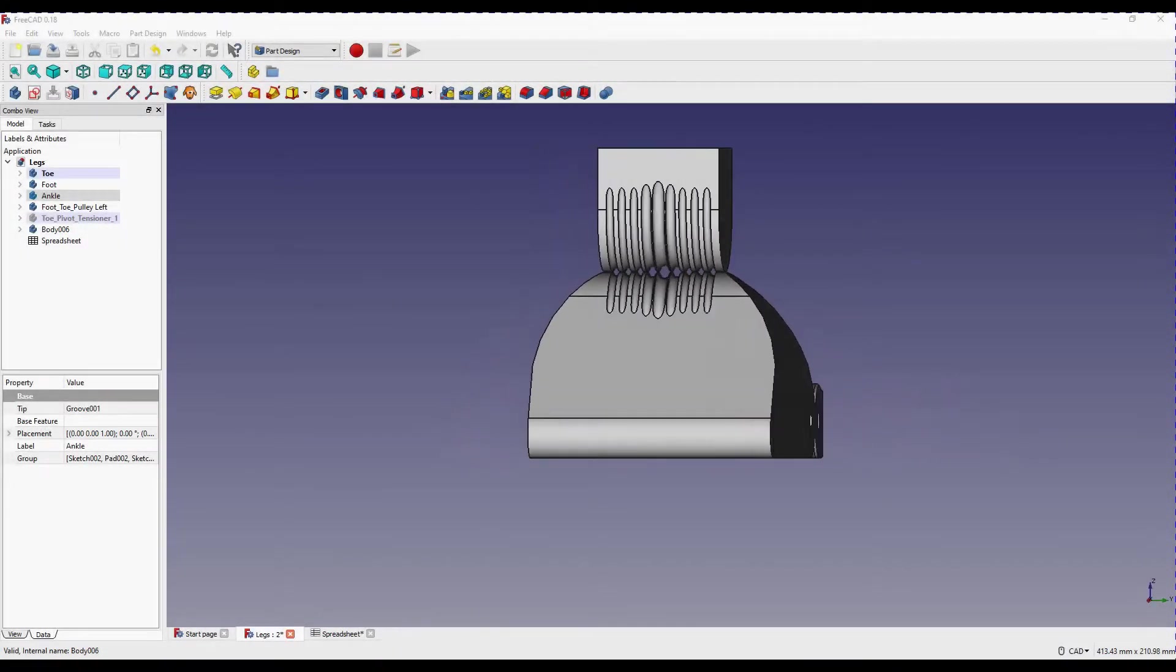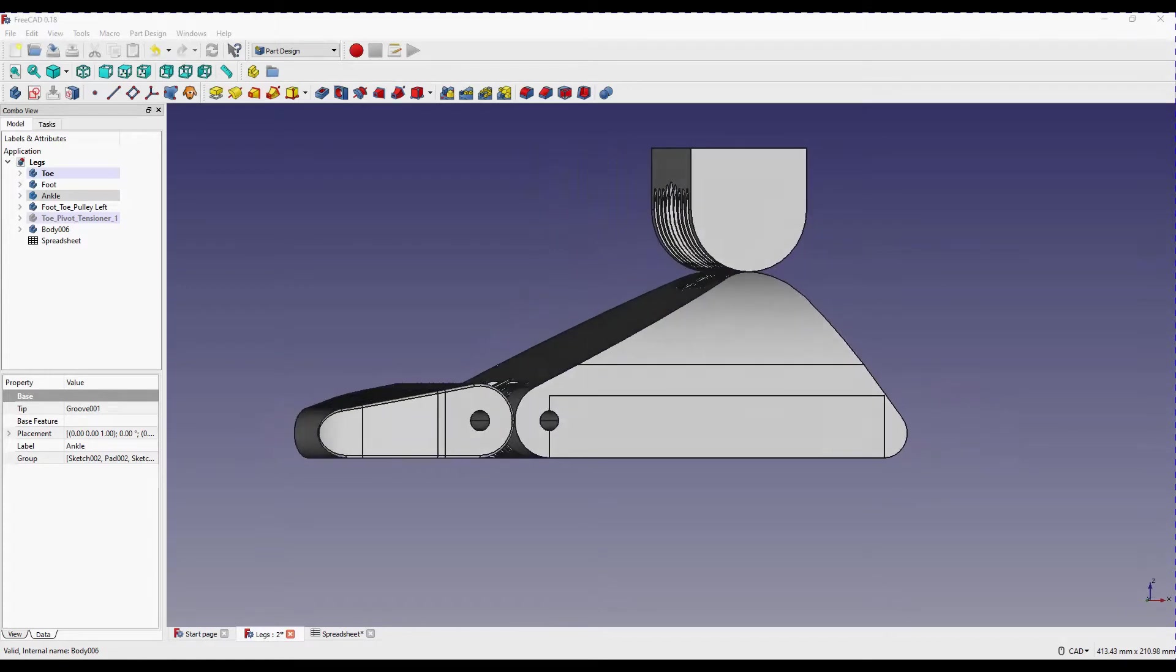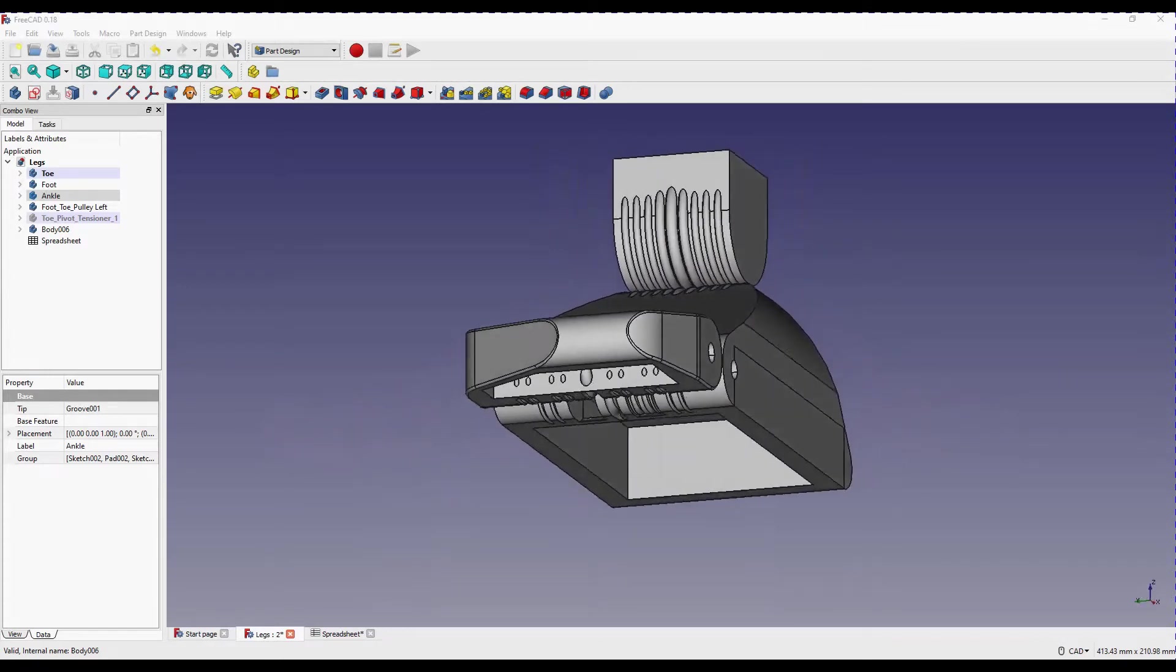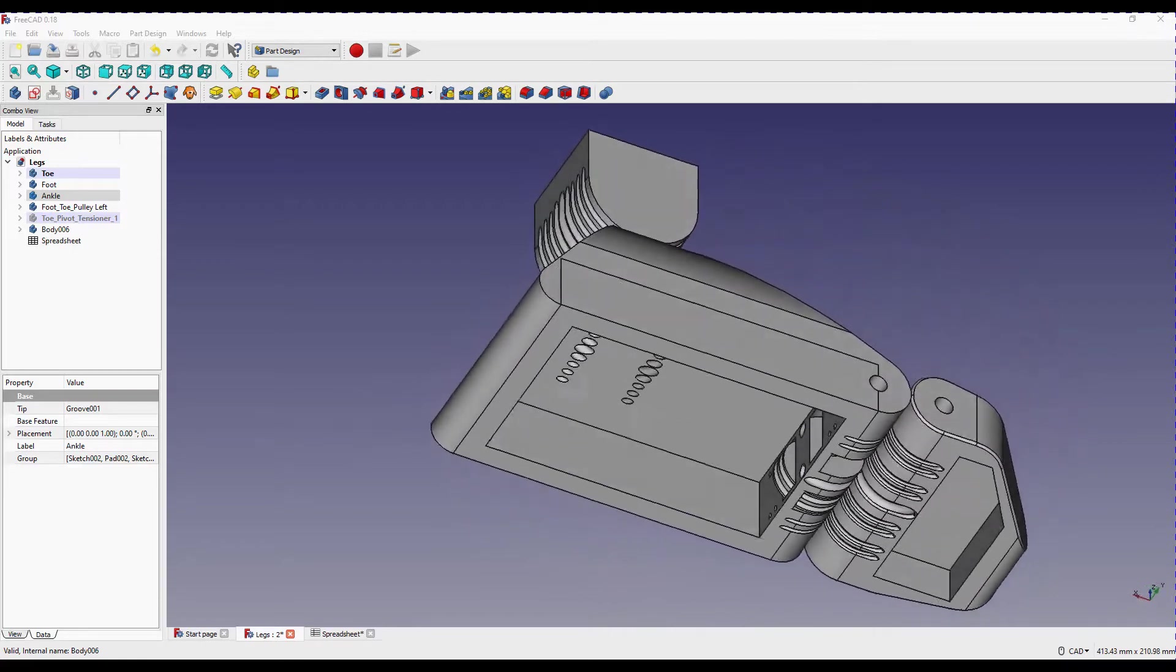Hello and welcome to the Cyber One YouTube channel. My name is Ray and this is part five of the walking robot series. In this video we're going to be talking about types of joints.